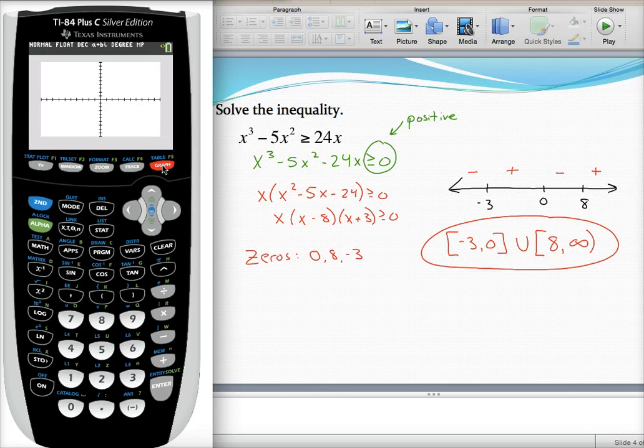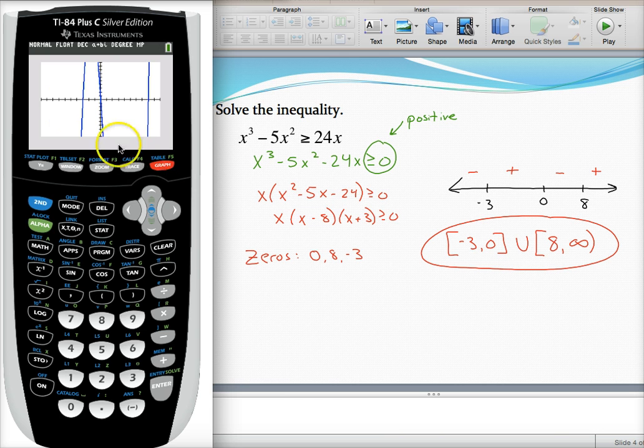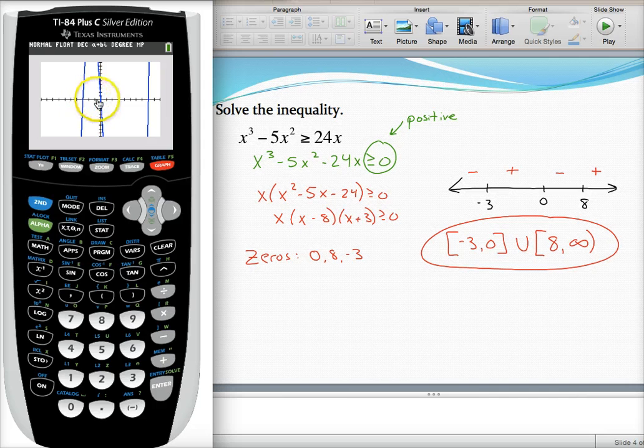If I want to confirm this by looking at the graph, which we don't need to do, but I think it's a good idea to use the table and the graph together. It looks like it's a little bit off the screen, but I can see that over here my graph is below the X axis, just like we predicted. Between negative three and zero, the graph is above the X axis.